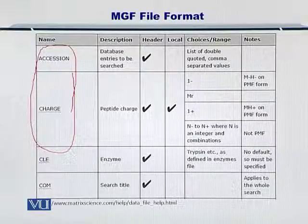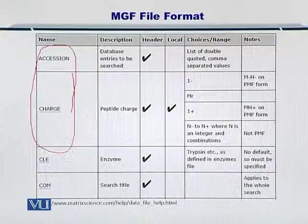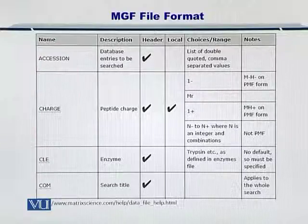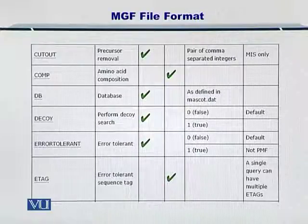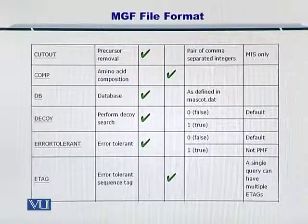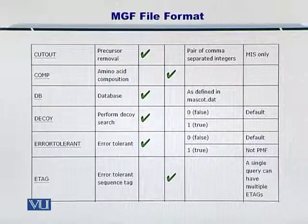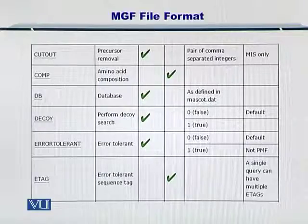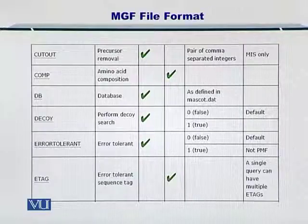Next, there is the CLE attribute and the COM attribute, which gives you the enzyme that is used or the search title that you can give for your search. You can also look at the cutout attribute for precursor removal, which gives you the precursor removal mass and the amino acid composition. The DB attribute gives you the database you want to search in your query. There is a decoy attribute as well, so if you want to perform a decoy search, you can have data here.